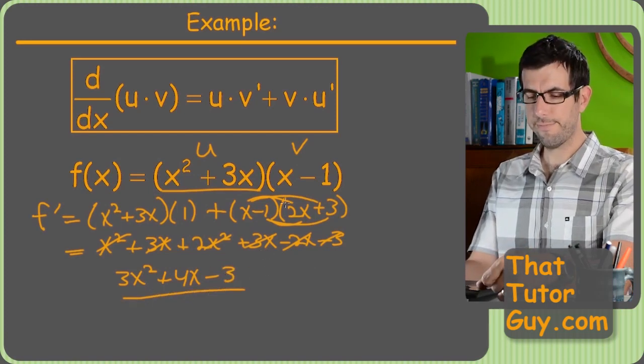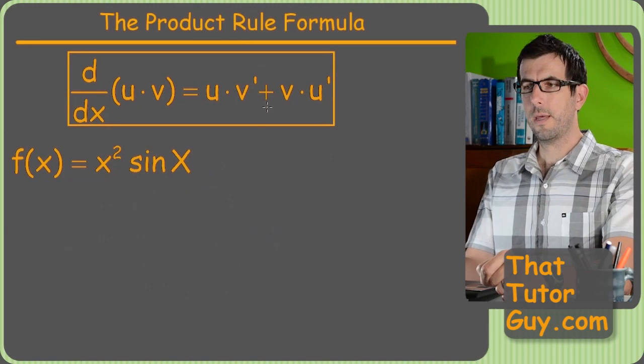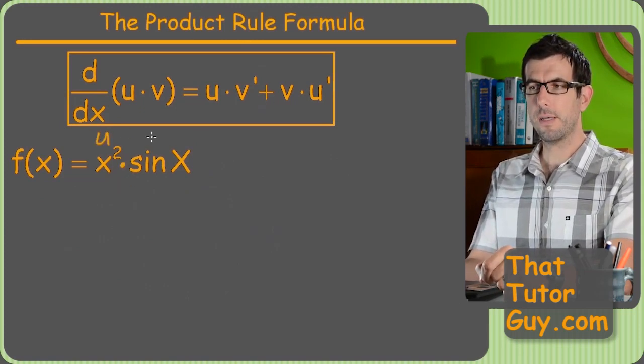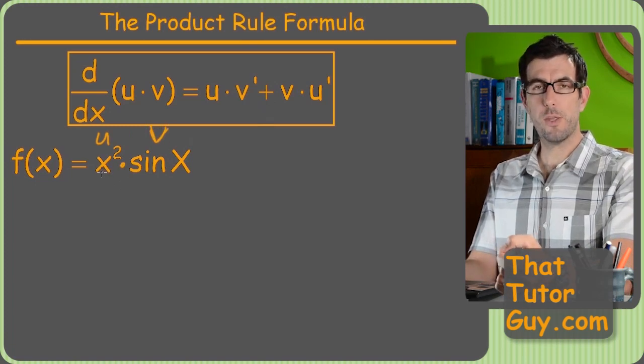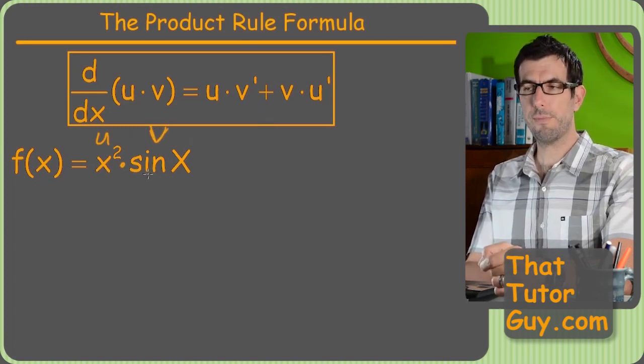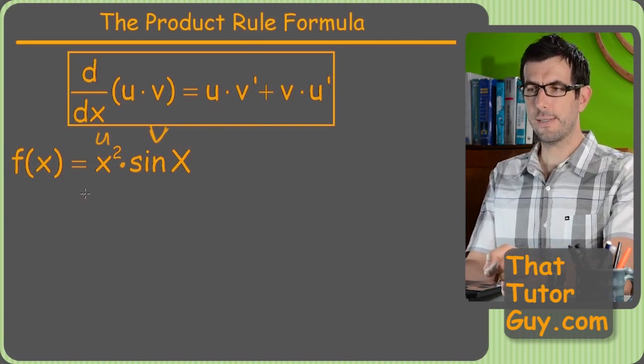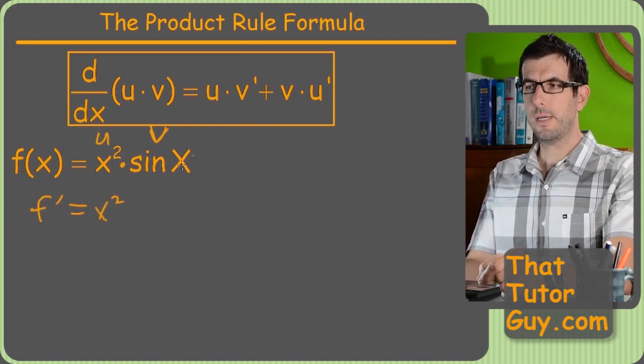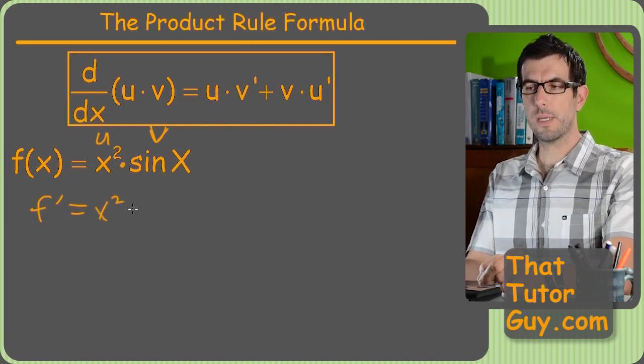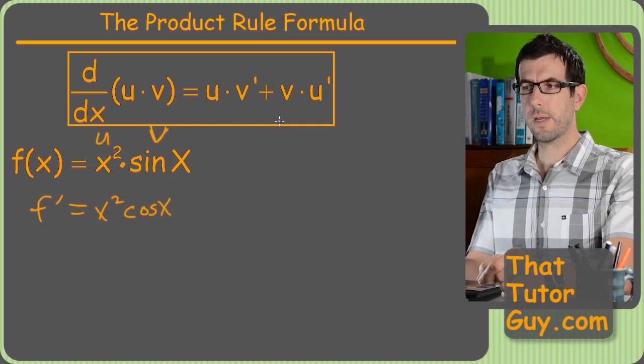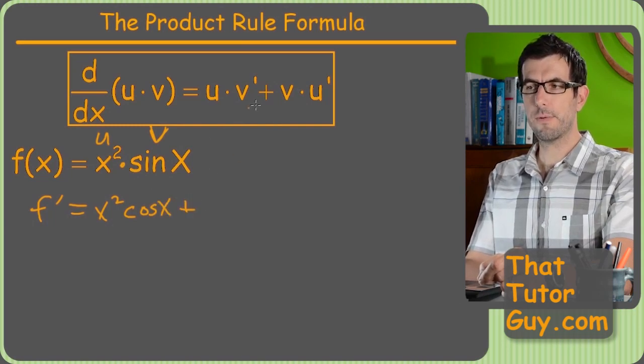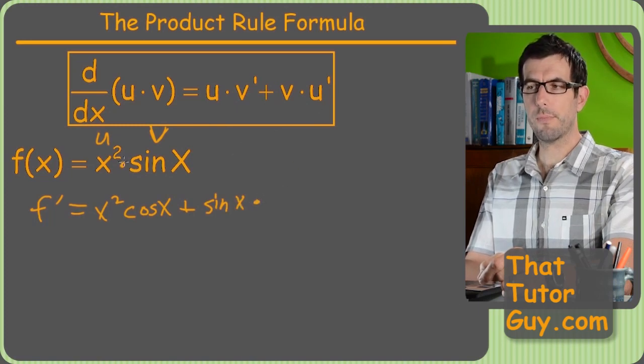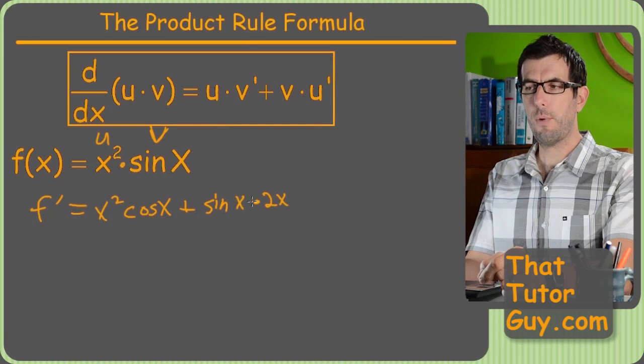Alright, pretty fun stuff. Once again, something times something. So we'll label this u, label this v, and you'll notice we have a mix of polynomials and trig functions on this one, but that don't matter, we're just going to plug and chug. So, f prime is going to equal u, which is x squared, times the derivative of v, which will be cosine. Then we're going to add v, which is sine x, times u prime, which is just 2x.